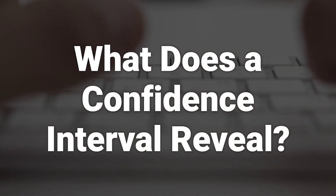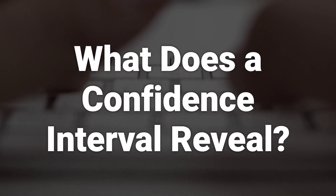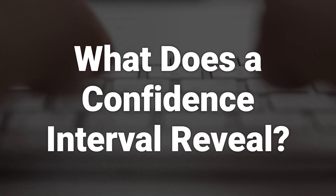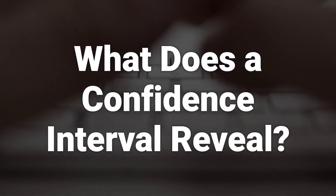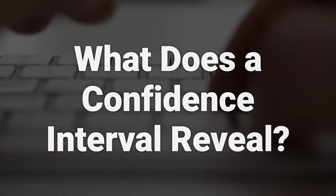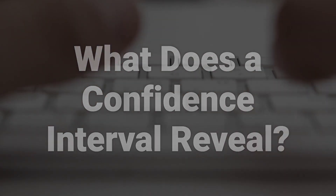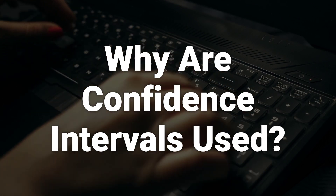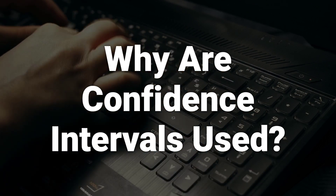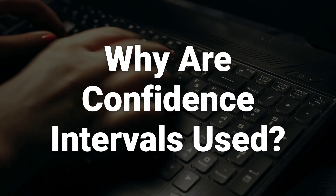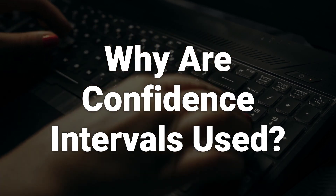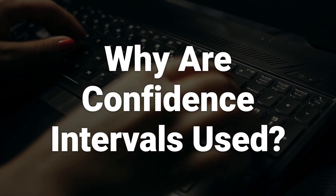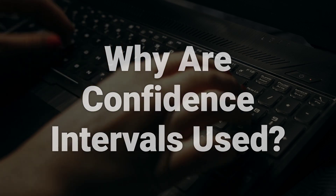A confidence interval is a range of values that likely contains an unknown population parameter a certain proportion of times. The confidence level is the percentage of probability that the confidence interval would contain the true population parameter when you draw a random sample many times. Statisticians use confidence intervals to measure uncertainty in a sample variable, helping determine how a sample may represent the true value of a population variable. The resulting datasets are all different — some intervals include the true population parameter and others do not.